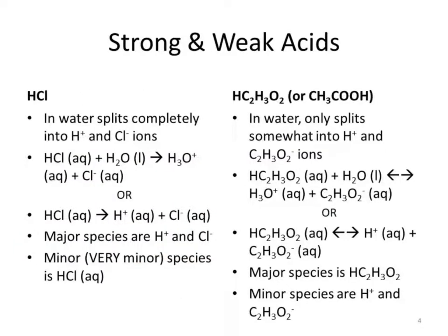In solution, hydrochloric acid is a strong acid — it splits completely into hydrogen ions and chloride ions. We can write two equations: hydrochloric acid plus water gives hydronium ion and chloride ion, or simply hydrochloric acid yields H+ and chloride. These get used interchangeably, and hydronium and H+ are used interchangeably throughout acid-base reactions.